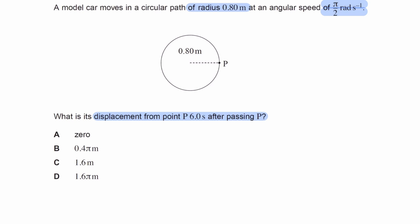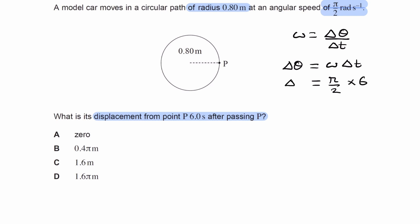The first thing we want to work out is where is the car after 6 seconds. We can do so by using the equation omega equals delta theta over delta t. Delta theta is the angular displacement, so that's equal to omega times delta t, rearranging the equation above. That is equal to pi over 2 — that's omega — multiplied by the time that has passed, which is 6 seconds. So the angular displacement is 3 pi radians.